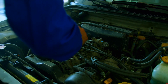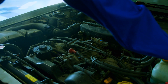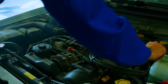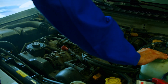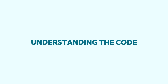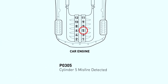Don't worry though — in this video we'll go through some steps to diagnose and potentially fix the problem ourselves. Before diving in, let's understand why this code appears. A misfire happens when the air-fuel mixture in a cylinder doesn't ignite properly. This can be caused by problems with the spark, fuel, or even air intake.